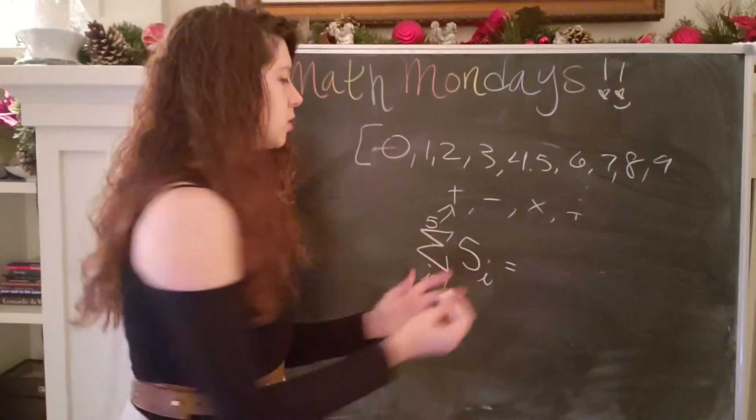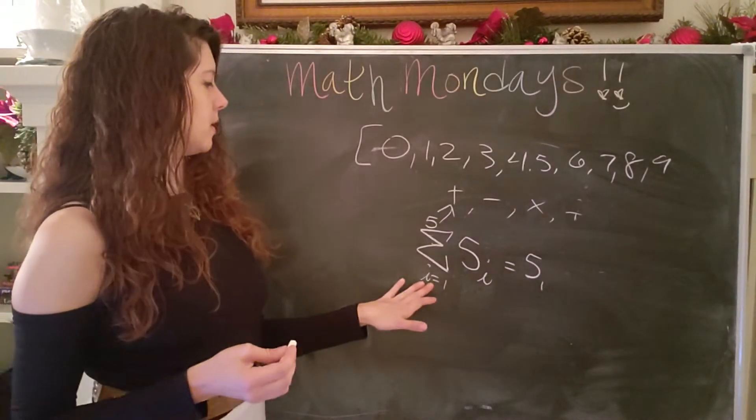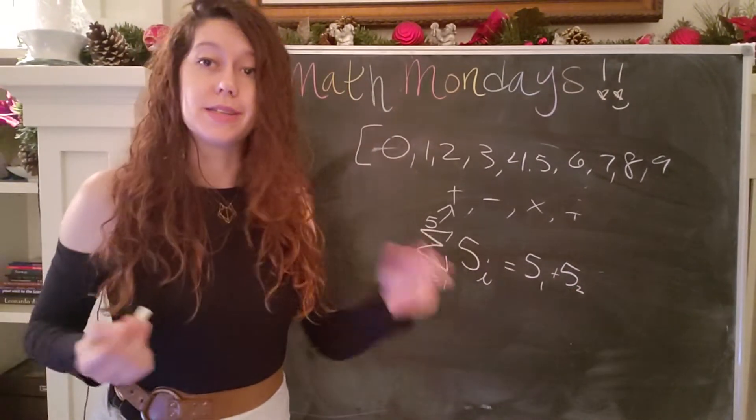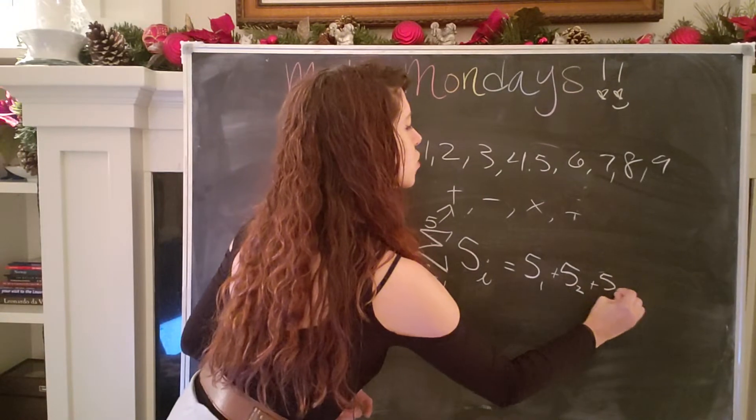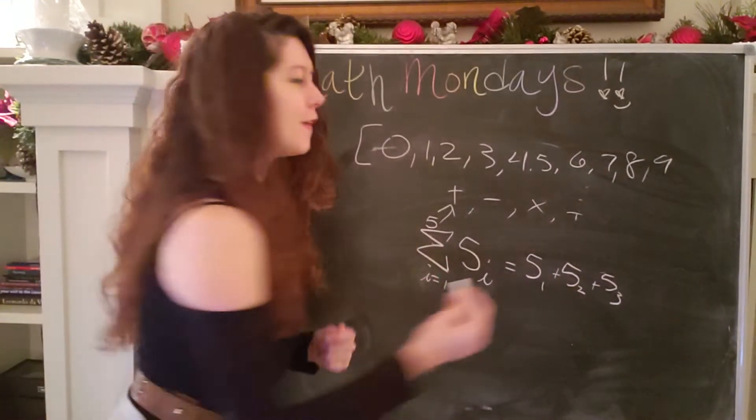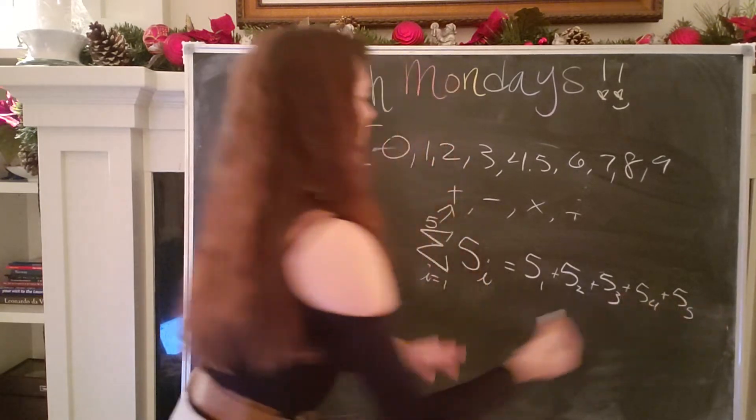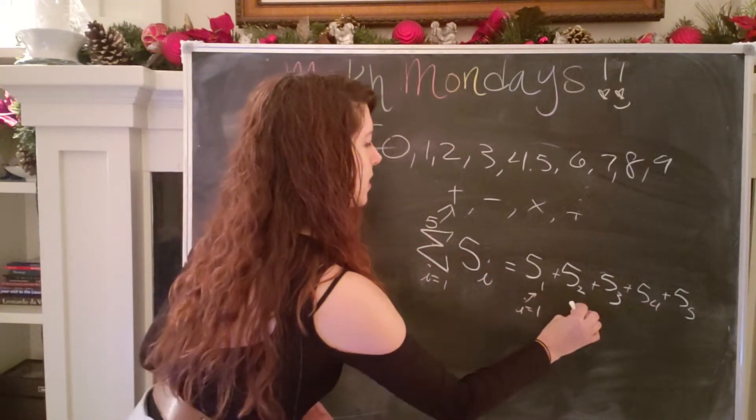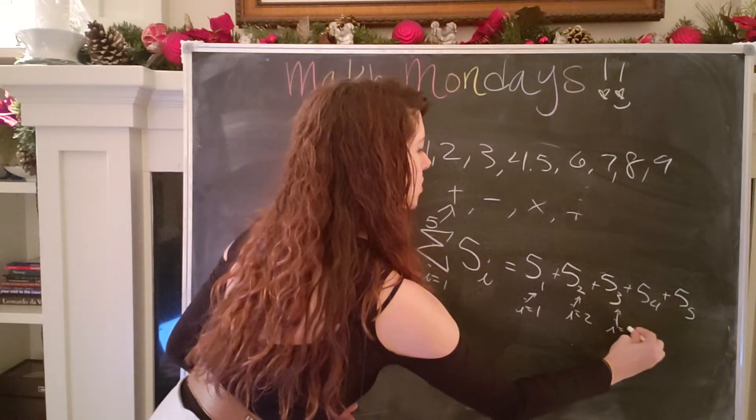So what this would look like is five subscript one. And then I add one to i, and so now I have five subscript two. That just means that it is my second five plus five subscript three or my third five plus five subscript four. And lastly, five subscript five. Now i equals five. So in this case, i equals one, i equals two, i equals three, and so on.